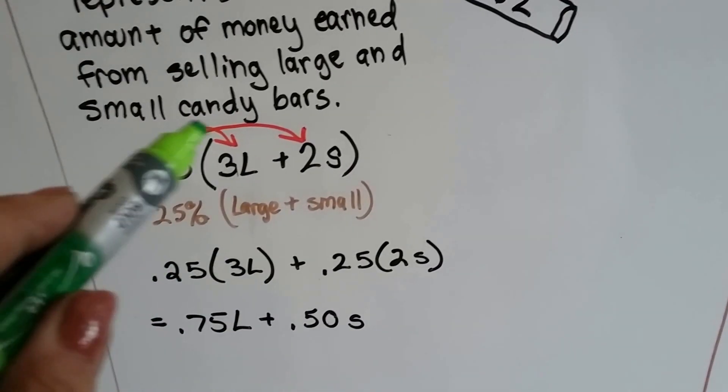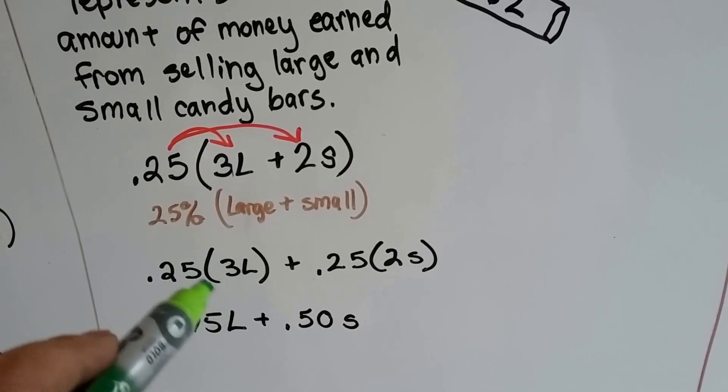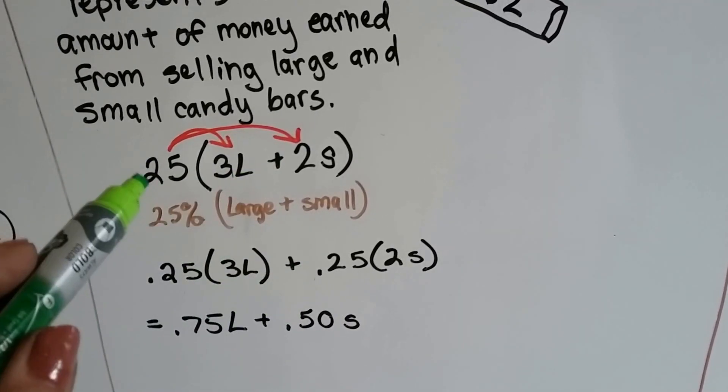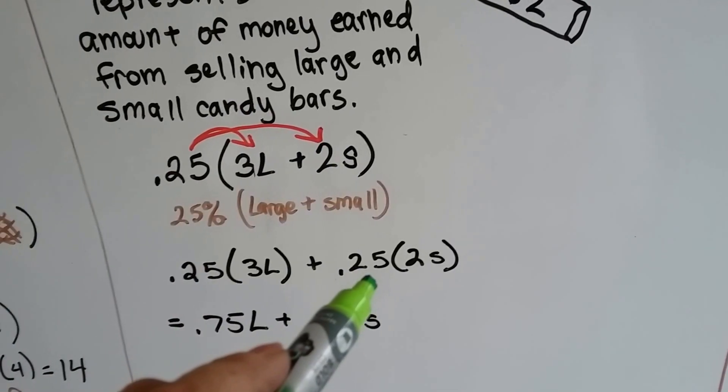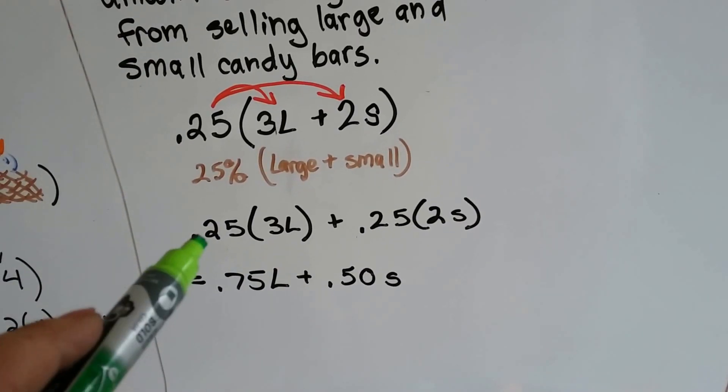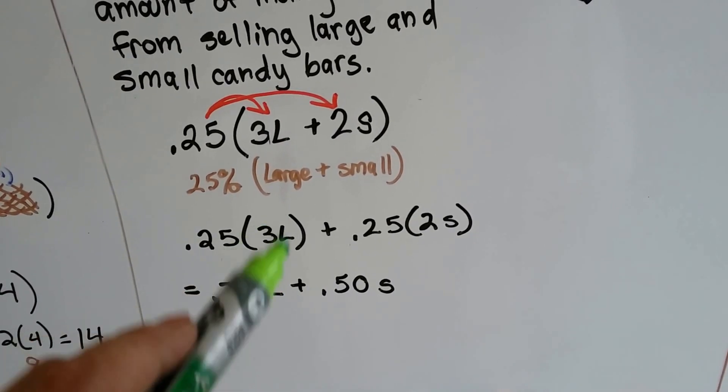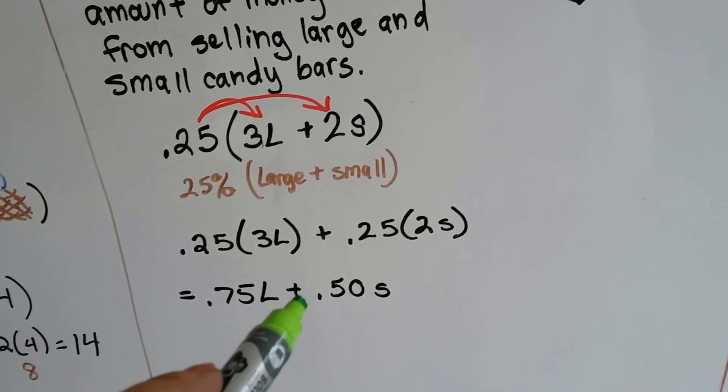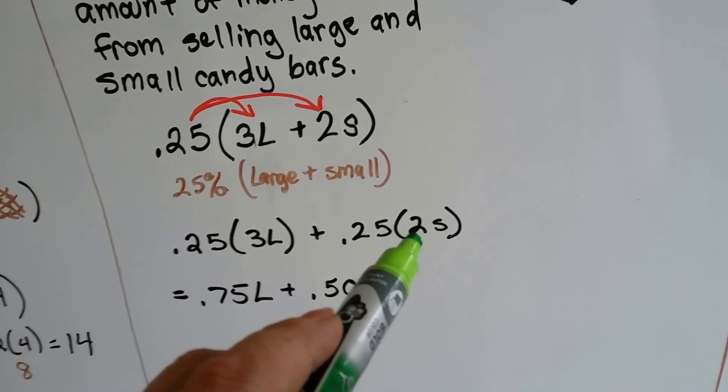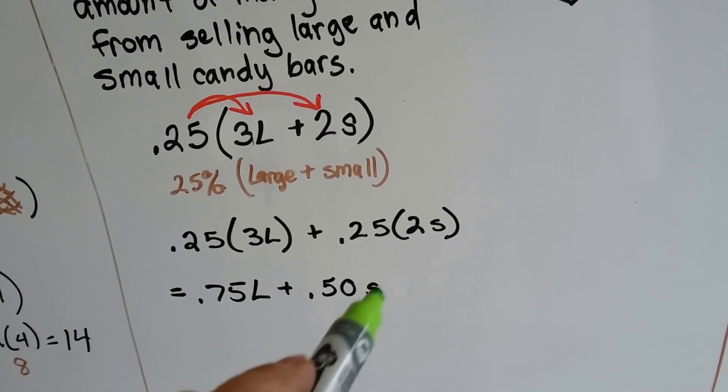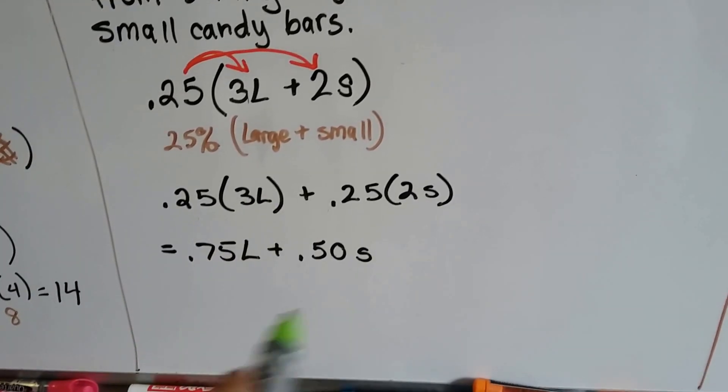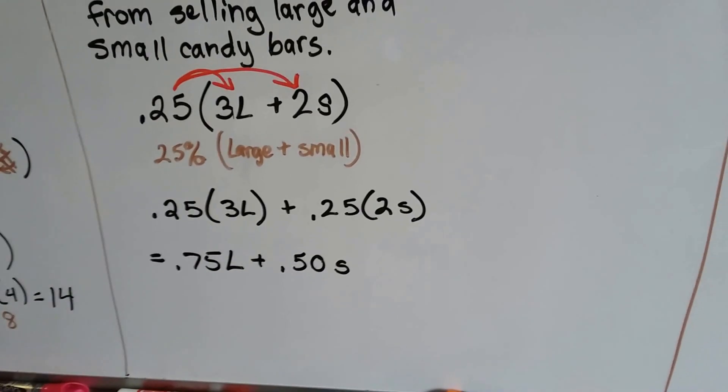So that's .25 times 3L right here plus .25 times 2S. And the .25 times 3 is .75L. And then we're going to add that to .25 times 2 which is .50S. And now that's simplified as far as it can go.